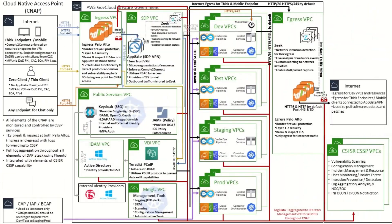Let's take a deeper look at the network path and how CNAP is implemented. Different device types can be consumed — thick endpoints, mobile devices, zero clients, and thin clients. Based on the device being used, you get access to different things. Everything flows first through the ingress VPC, which has a Palo Alto IPS that handles border firewall protection with Layer 1 to 7 security, TLS break-and-inspect, and web application firewall capability — acting as the centralized ingress point.